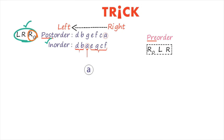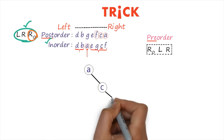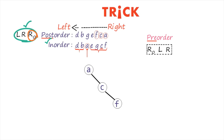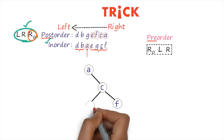Now we find the location of each node. Reading from right to left in post-order, next is C. According to the in-order traversal, C is at the right side of root A. Next is F — its location according to in-order is right side of root and also right side of C. Next is E — its relative position is right side of root but left side of C.